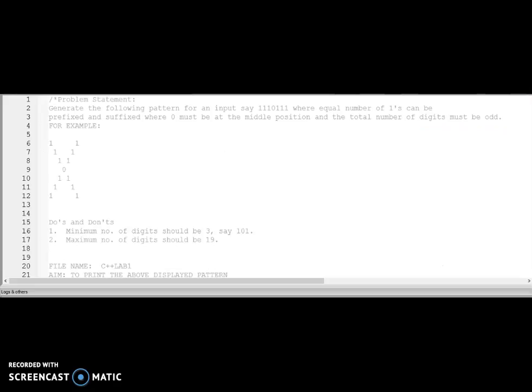So to make it more clear we will take an example. The question is that I have to print something like this. And the number given is 1 1 1 0 1 1 1. This is what I need to print in the form of X. And at the end of the question I find there is a condition given. That the total number of digits must be odd. Keep it in your mind.